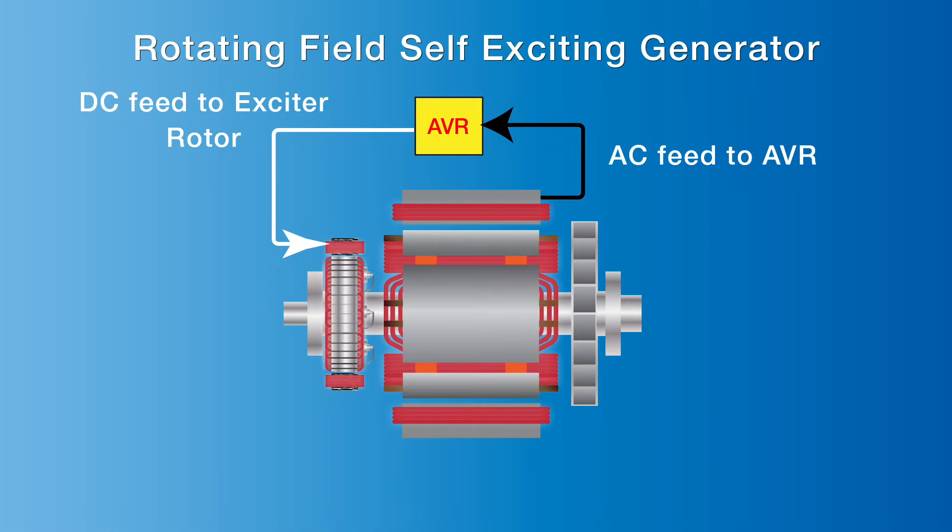An AC electric current is then induced into the exciter rotor, turning within the exciter stator's magnetic field, per Faraday's law stating an EMF electric current is generated in a conductor moving in a magnetic field.